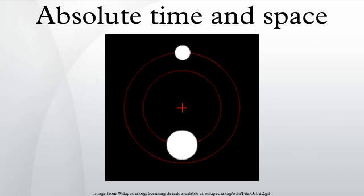Absolute simultaneity refers to the experimental establishment of coincidence of two or more events in time at different locations in space in a manner agreed upon by all observers in the universe.